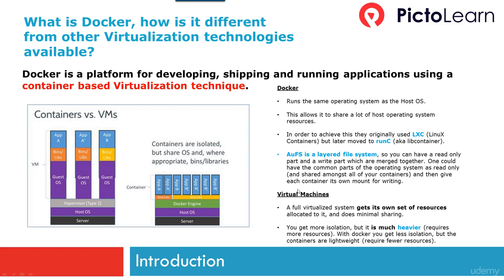Virtual machines get their own set of resources allocated and do minimal sharing with the host operating system. There are advantages to using virtual machines as well — a virtual machine is more isolated, but it can be very heavy on resources. Docker gives you less isolation, but the containers are lightweight.